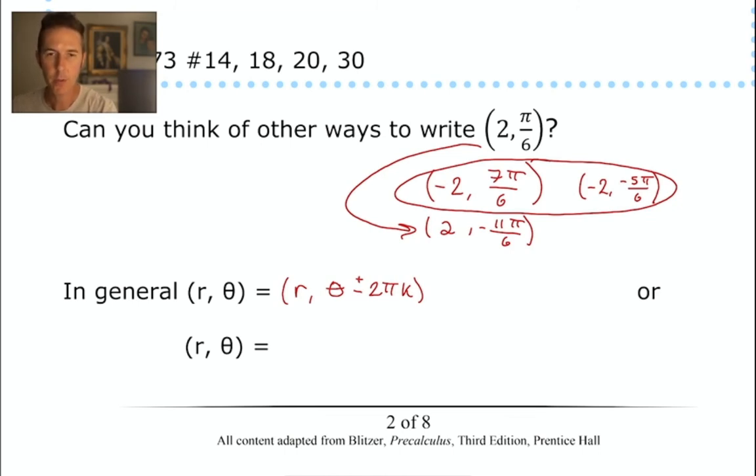The other option that we've just seen is that we could use a negative r value, and instead of using theta, we could take theta and add or subtract a half of a rotation so that we're aiming away from our destination. Could you add a half of a rotation, and once you're aiming away from where you really want to go, could you add additional full rotations? You could. That's why I'm saying we could come up with all sorts of general representations for other ways to get to our destination, but these are the two primary ones.